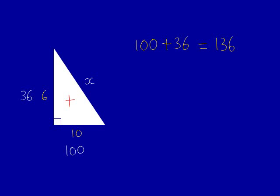So 100 plus 36, as we put a plus in the middle of the triangle, we add them up, is 136. We must then square root the number, so the square root of 136. The answer is 11.7.